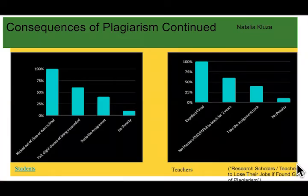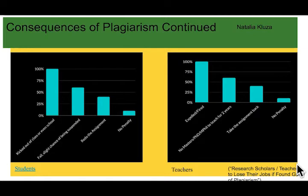Here is a bar chart of students plagiarizing. If students plagiarize up to 100%, they will be kicked out of class or even school. If they plagiarize up to 60%, they may fail or get suspended. If they plagiarize up to 40%, they will have to redo the assignment. For teachers, it is different: if they plagiarize up to 100%, they may get fired; up to 60%, they will get no master's or PhD and cannot teach for two years; up to 40%, they will have to take the assignment back.